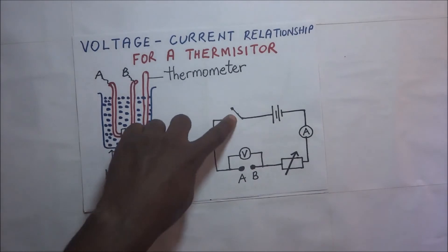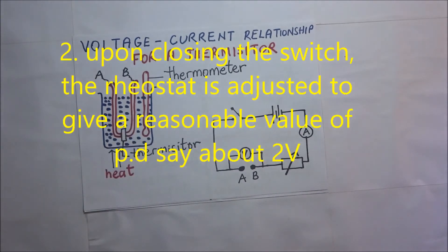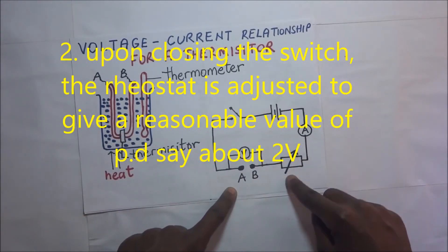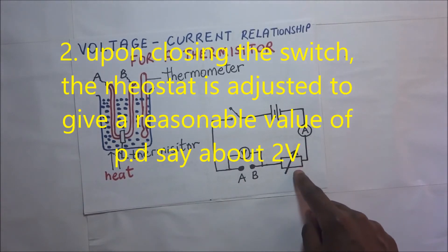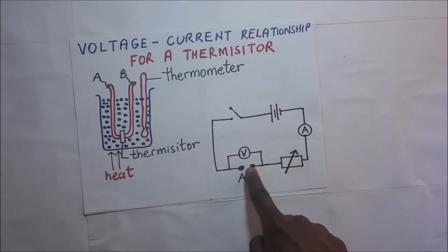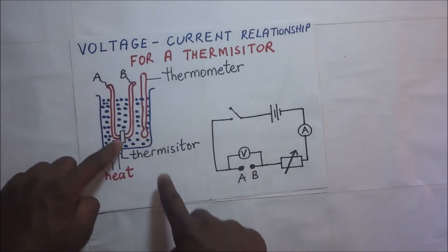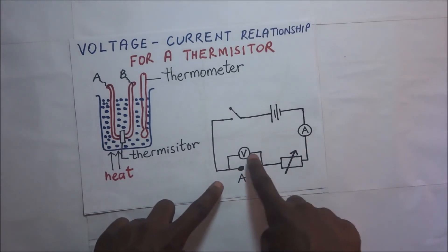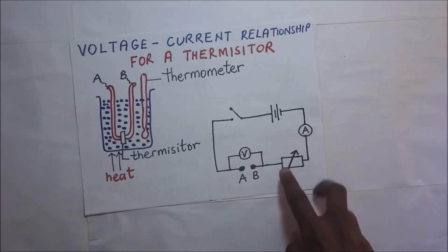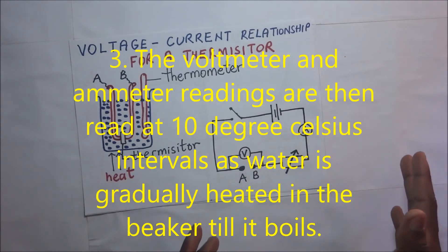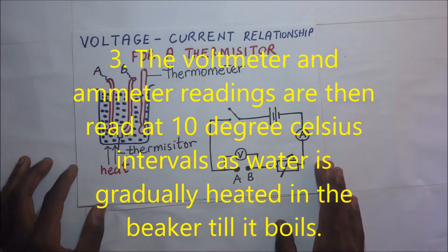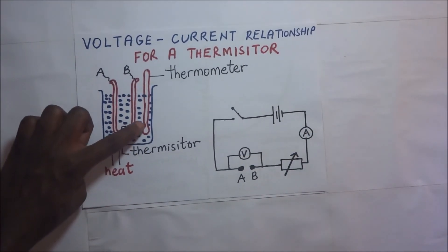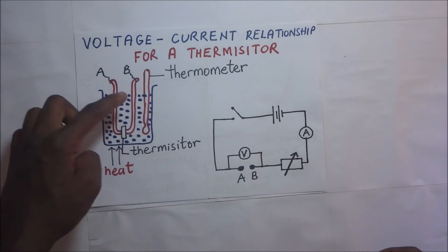When we close the switch, the rheostat is adjusted to give a reasonable value of potential difference across A and B, that is across the thermistor. The voltmeter and the ammeter readings are then read. We take our readings, then we record our readings. After recording our readings, we are going to monitor the temperature of this thermometer until it is 10 degrees Celsius higher.